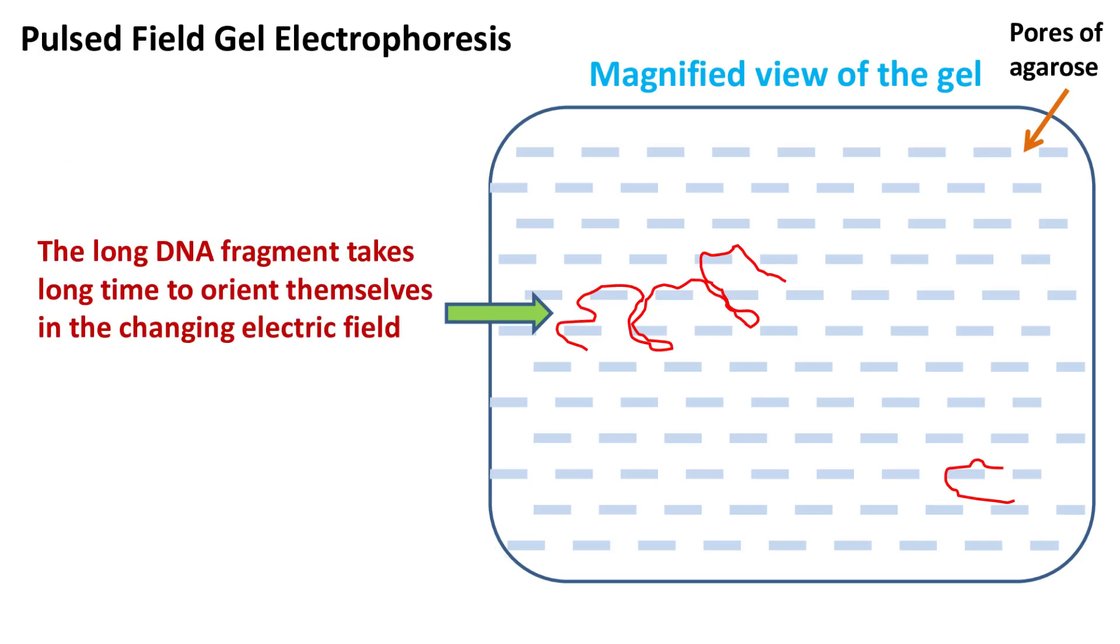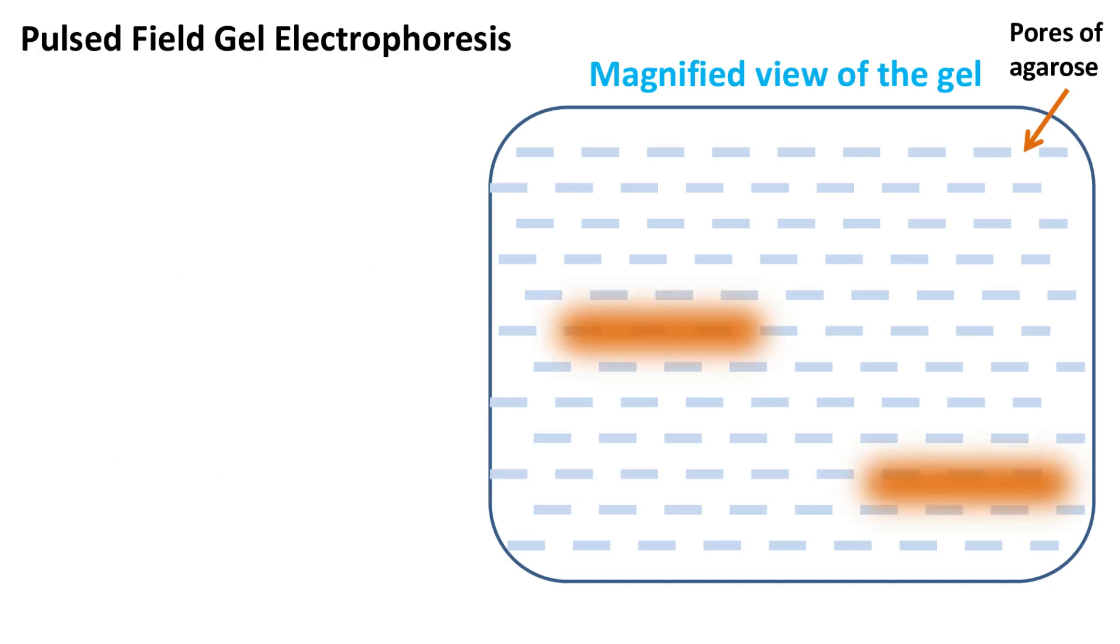Because of this zigzag movement, the larger DNA fragments take a long time to orient themselves in the changing electric field, whereas the short DNA fragments orient themselves easily with the changing electric field.